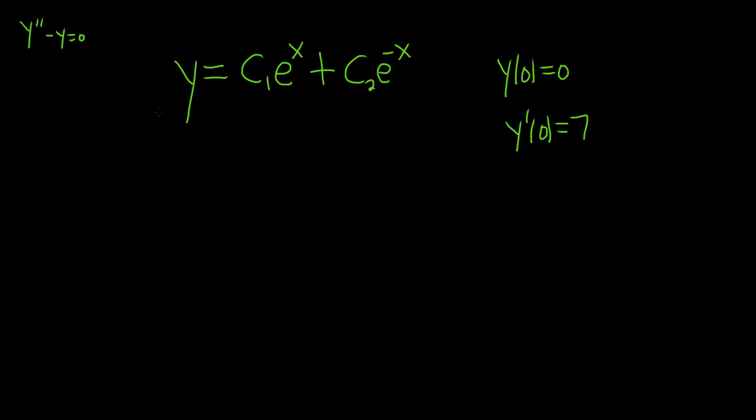In this problem, we're given a solution to a differential equation, y equals c1 e to the x plus c2 e to the negative x. And this is a solution to this differential equation here, y double prime minus y equals 0.